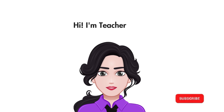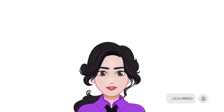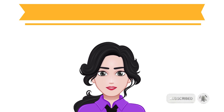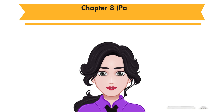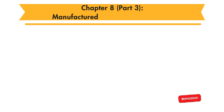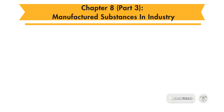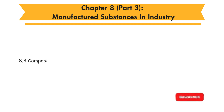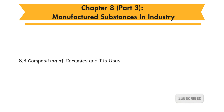Hi, I'm Teacher Daisy. Now, let's learn Form 4 Chemistry Chapter 8 Part 3, Manufactured Substances in Industry. In this chapter, you will learn 8.3 Composition of Ceramics and Its Uses.